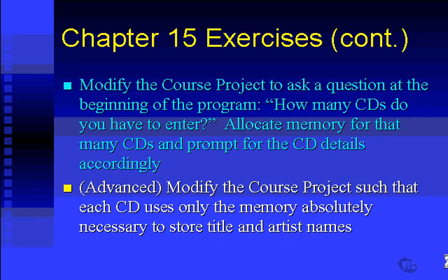Finally, this is an advanced exercise to really test your understanding of pointers and memory allocation. Modify the course project so that each CD uses only the memory absolutely necessary to store the title and artist names. For example, if the artist is U2, that's only a two-character name — you really only need three characters of memory to store the string. But currently we're allocating 60 bytes to store each title and each artist name.